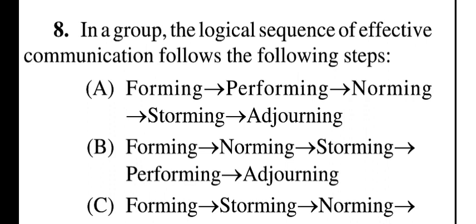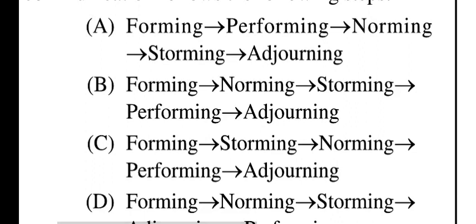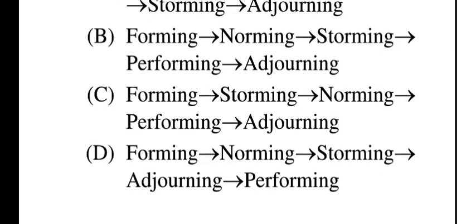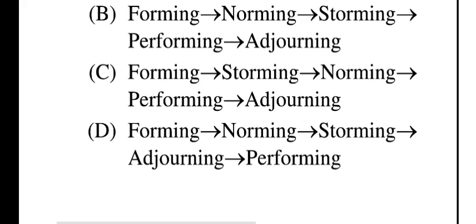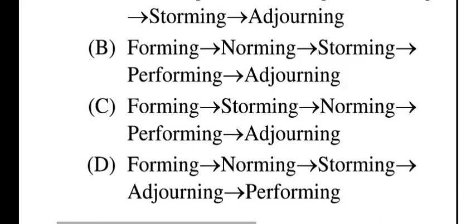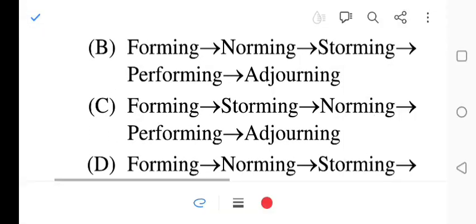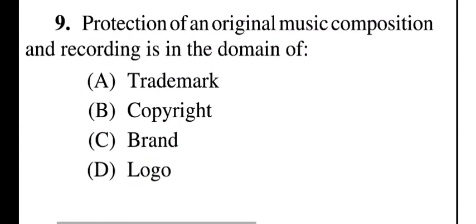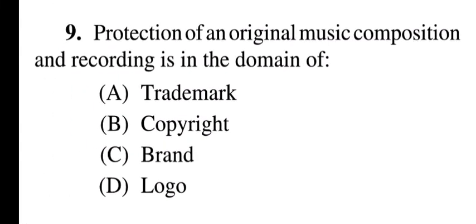Question eight says: in a group, the logical sequence of effective communication follows the steps — forming, performing, norming, storming, adjourning; or forming, norming, storming, performing, adjourning; or forming, storming, norming, performing, adjourning. Question eight, option C is correct: forming, storming, norming, performing, adjourning.